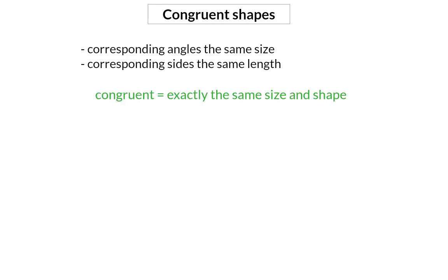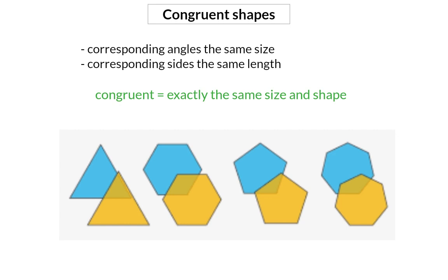Therefore, congruent shapes are exactly the same size and shape and can fit on each other. In mathematics we use the symbol of three equal lines to show congruency.